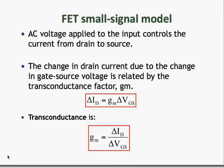Let us now begin to construct a small signal model or an AC model for a FET. The voltage that you apply to the input of a FET controls the current flowing from the drain to source. If you apply a time-varying AC voltage at the input, you will consequently get a time-varying output current. The change in drain current is related to the change in gate voltage by a transconductance factor called GM.